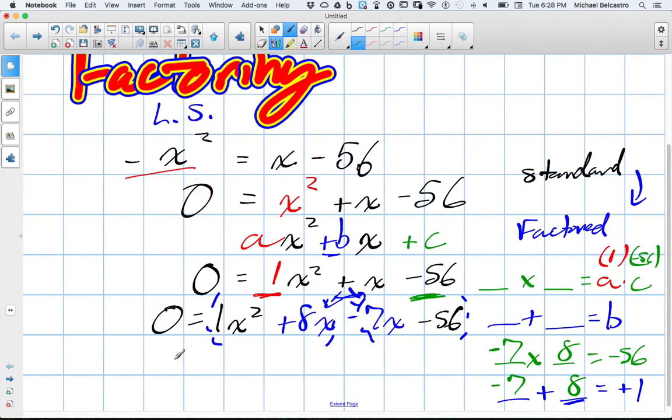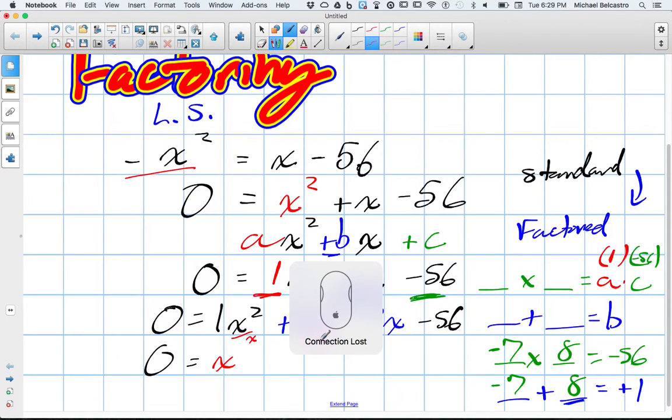From here, we would do some common factoring. I need a common term that comes out of x squared and 8x. Well, I know x will come out. So when I pull x out, I'm going to divide both of those by the value of x. When we divide x squared by x, we just drop the power, so we're left with just the value of x. And when you divide 8x by x, you're left with just 8.